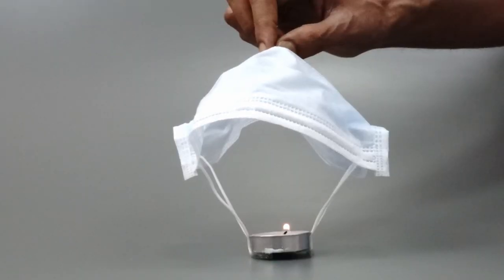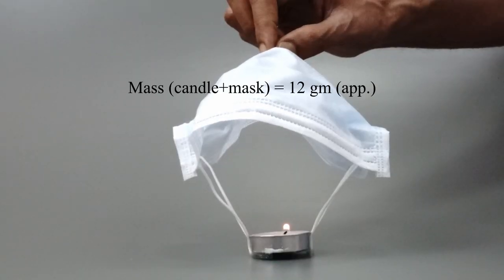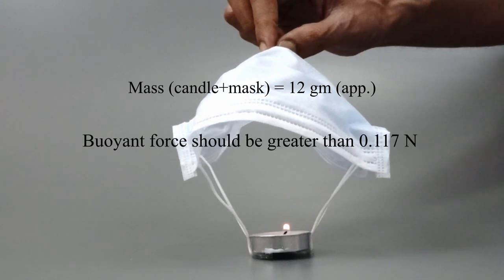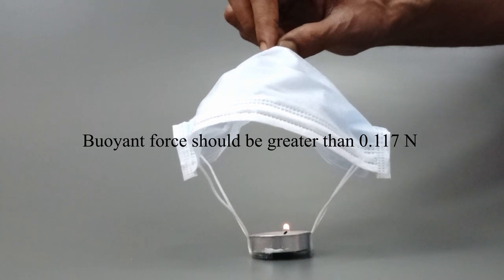Here for 12 grams of candle and mask system the gravitational weight will be equal to 0.117 newton. The buoyant force must be greater than this weight. Then only the whole assembly can float.